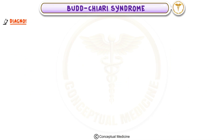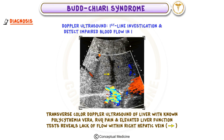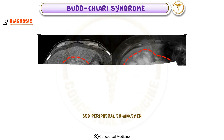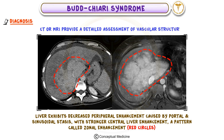To diagnose this condition, the first-line investigation is usually a Doppler ultrasound, which can detect impaired blood flow in the hepatic veins. Further imaging, such as CT or MRI, can provide a detailed assessment of the vascular structures.